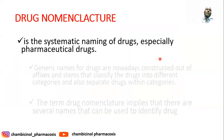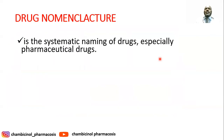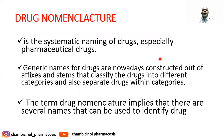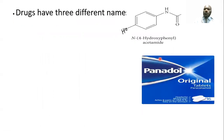Apart from that, we are going to discuss in detail about drug nomenclature — the systematic naming of drugs, especially pharmaceutical drugs. This implies that several names can be used to identify the same drug, so the same drug can have different names. There are three different names that can be assigned to a drug.